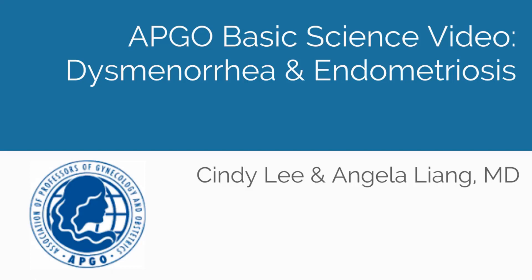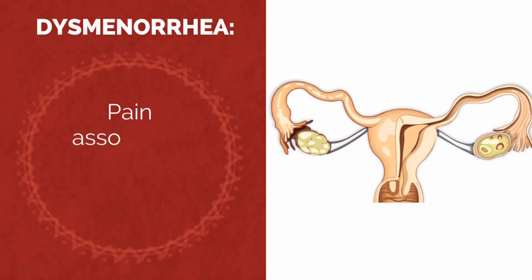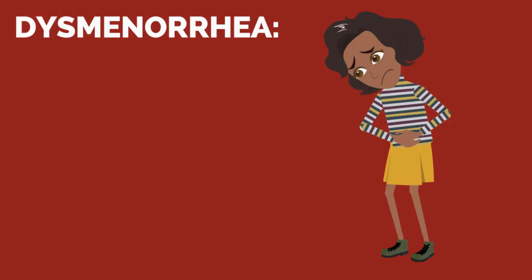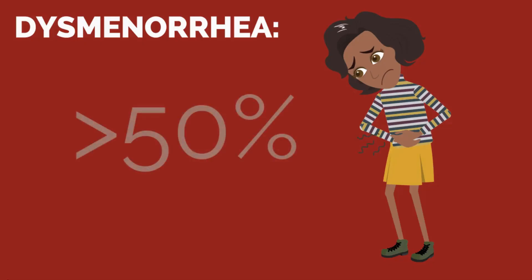APCO Basic Science Topic: Dysmenorrhea and Endometriosis. Dysmenorrhea is pain associated with menstruation. It is the most commonly reported menstrual disorder, with more than half of menstruating women experiencing some pain each month.